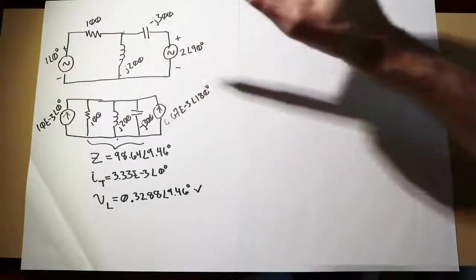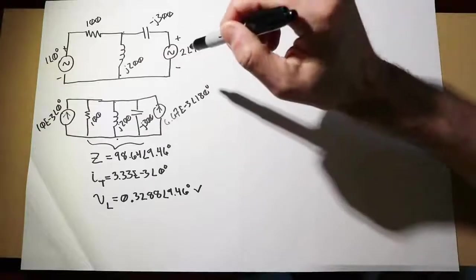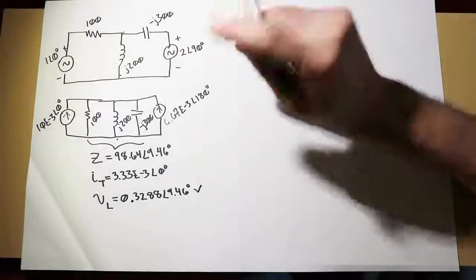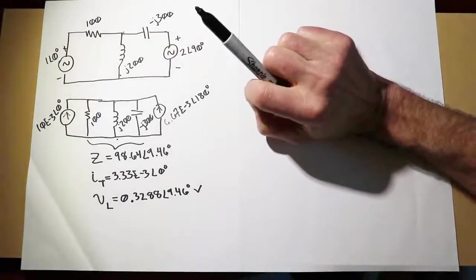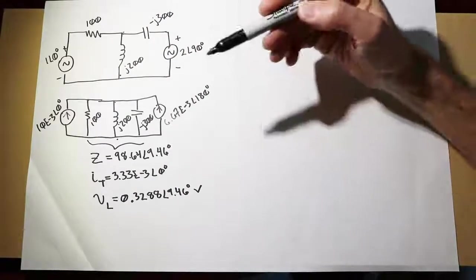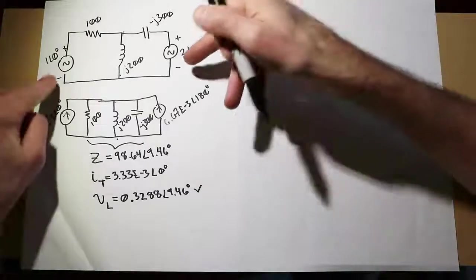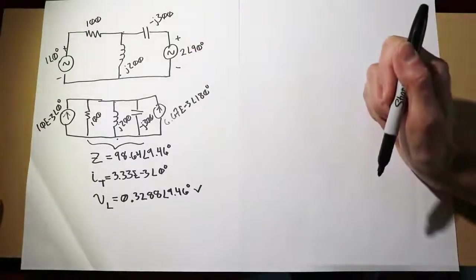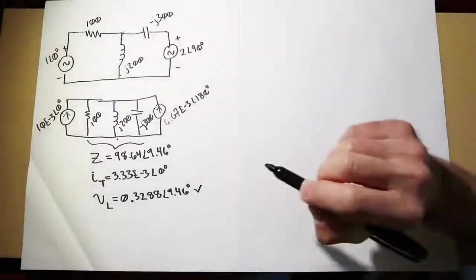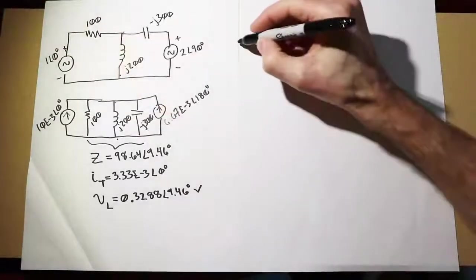Every single source that we consider, all other sources will be replaced with their ideal internal impedance. So that means for a voltage source, it'll be shorted. For a current source, it'll be opened. In this case, we have two sources, so we'll have two circuits. First, we'll consider the 1-volt source.